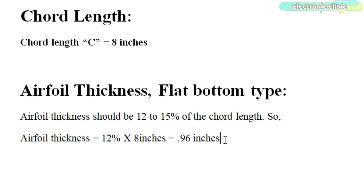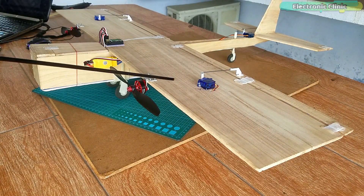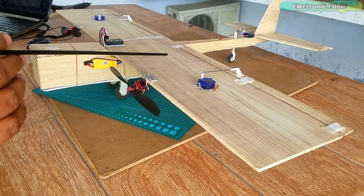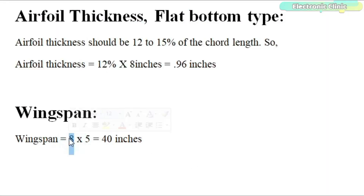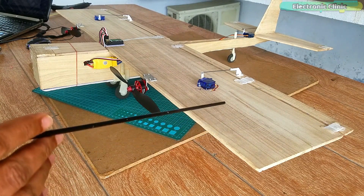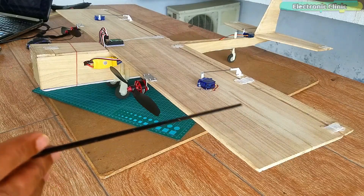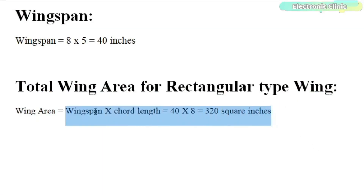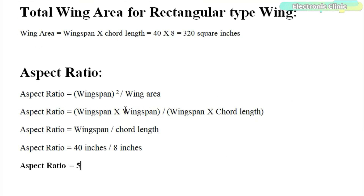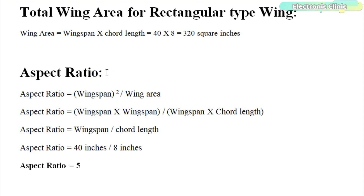There are a few thumb rules used in RC modeling. According to these rules, the wingspan should be 5 to 6 times the chord length. Our chord length is 8 inches, so wingspan equals 8 times 5, which is equal to 40 inches. As we are using a rectangular type wing, its area is wingspan times chord length: 40 times 8, which equals 320 square inches. The aspect ratio determines the gliding performance — as wingspan increases, aspect ratio increases and gliding performance improves. For this particular RC plane the aspect ratio is 5.